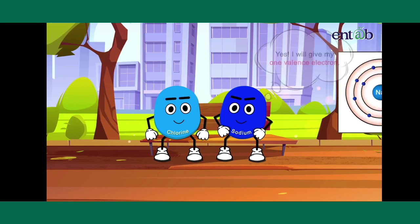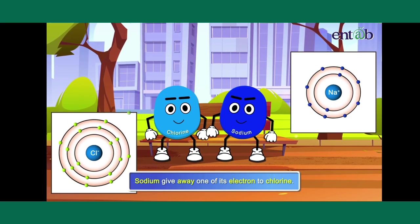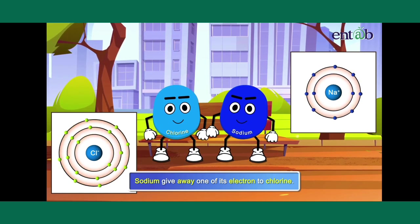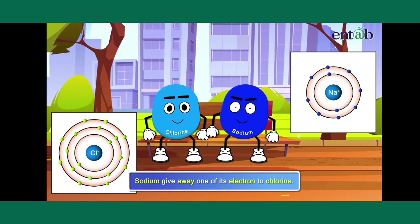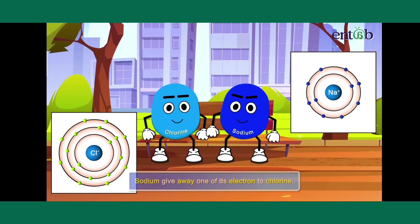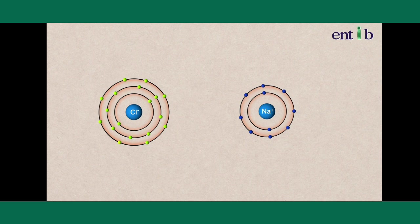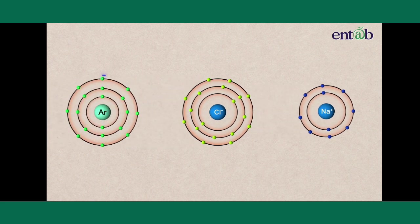So, sodium gave away one of its electrons to chlorine and now had eight electrons in its valence shell. Chlorine, in turn, was grateful to accept the electron, which helped it attain a noble gas configuration like Argon. That is eight electrons in the last shell.